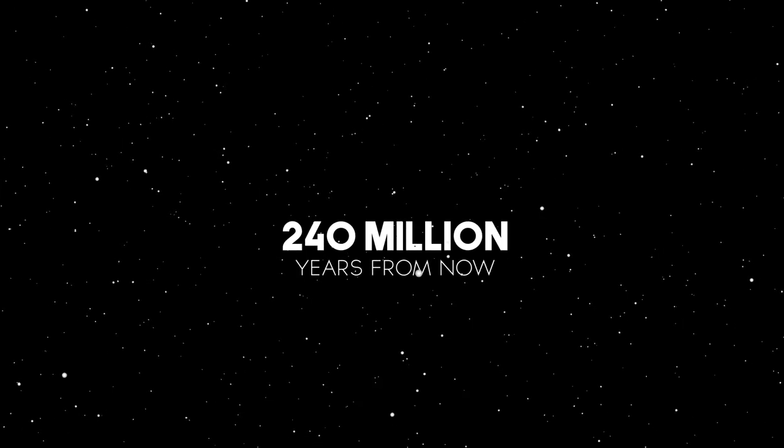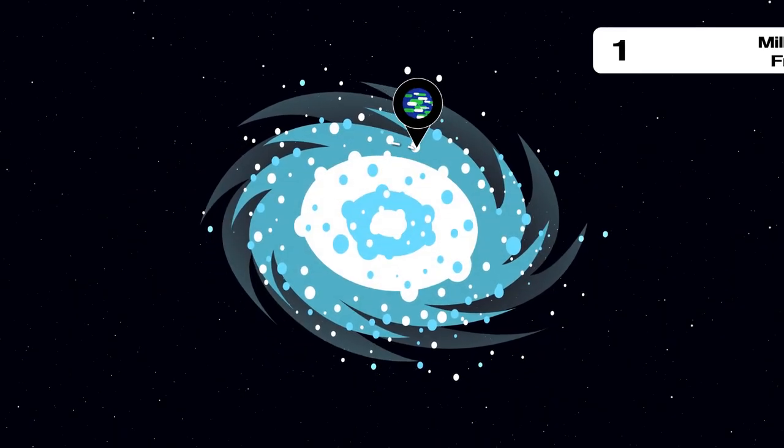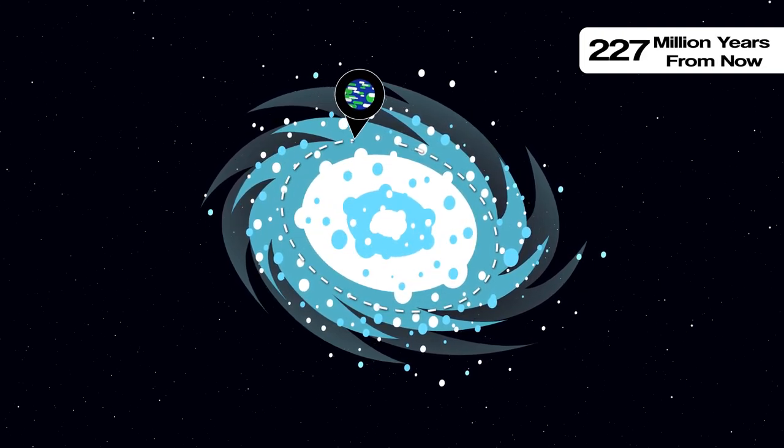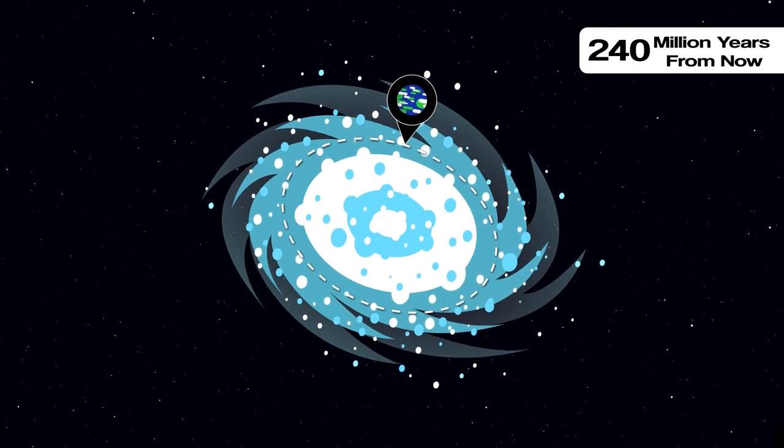Two hundred and forty million years from now, the Earth will have finally completed one full orbit around the galactic center. It means one full orbit around the supermassive black hole of our galaxy from its current position.